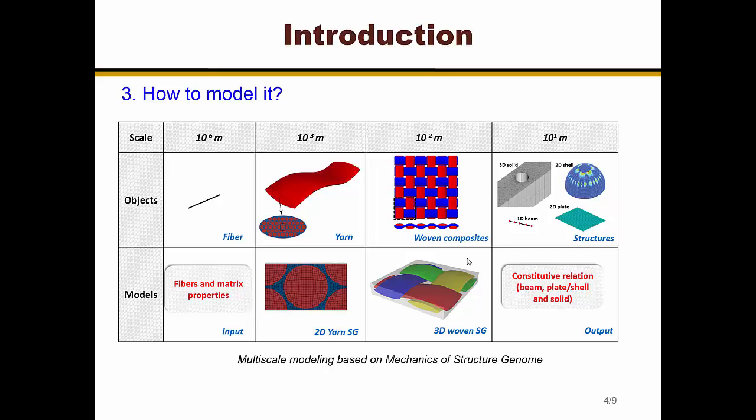So if we want to model a solid structure, this constitutive information is a 6x6 stiffness matrix of a material. If we want to model plate or shell, this constitutive information can be the ABD matrix. And if we want to model beam, this constitutive information can be the beam stiffness matrix.